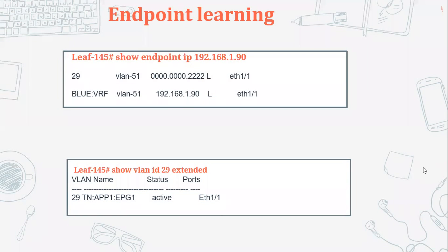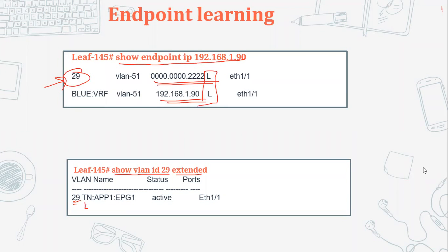From the 'show endpoint ip' output, if we see the alphabet 'L' it indicates a local endpoint. We also have locally significant Platform Independent (PI) VLANs that are automatically created. These are locally significant. For example, if we check 'show vlan id 29 extended', it gives more information such as which EPG this VLAN is created against. We'll discuss these VLANs further.